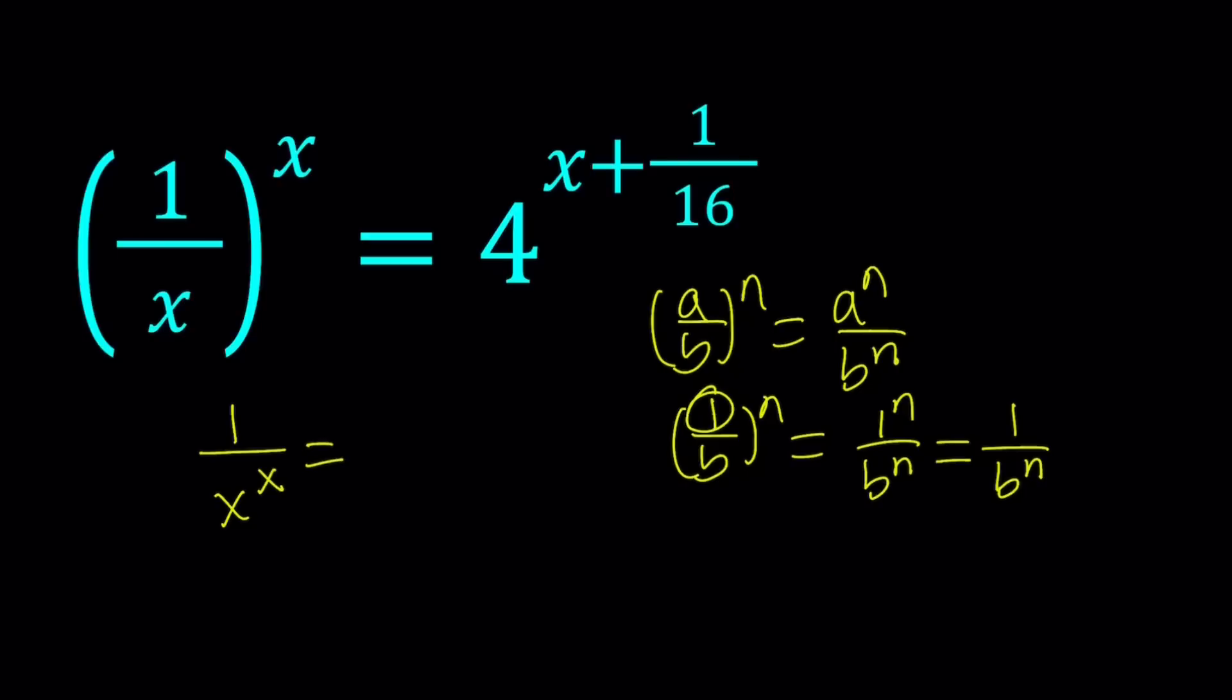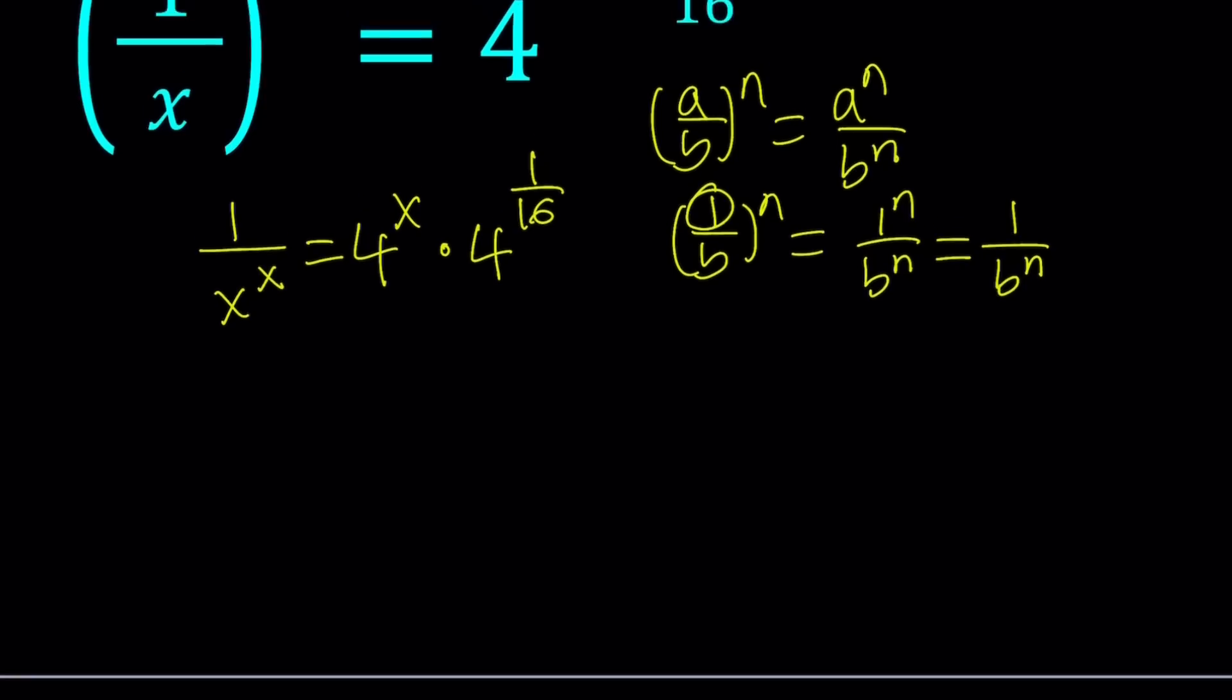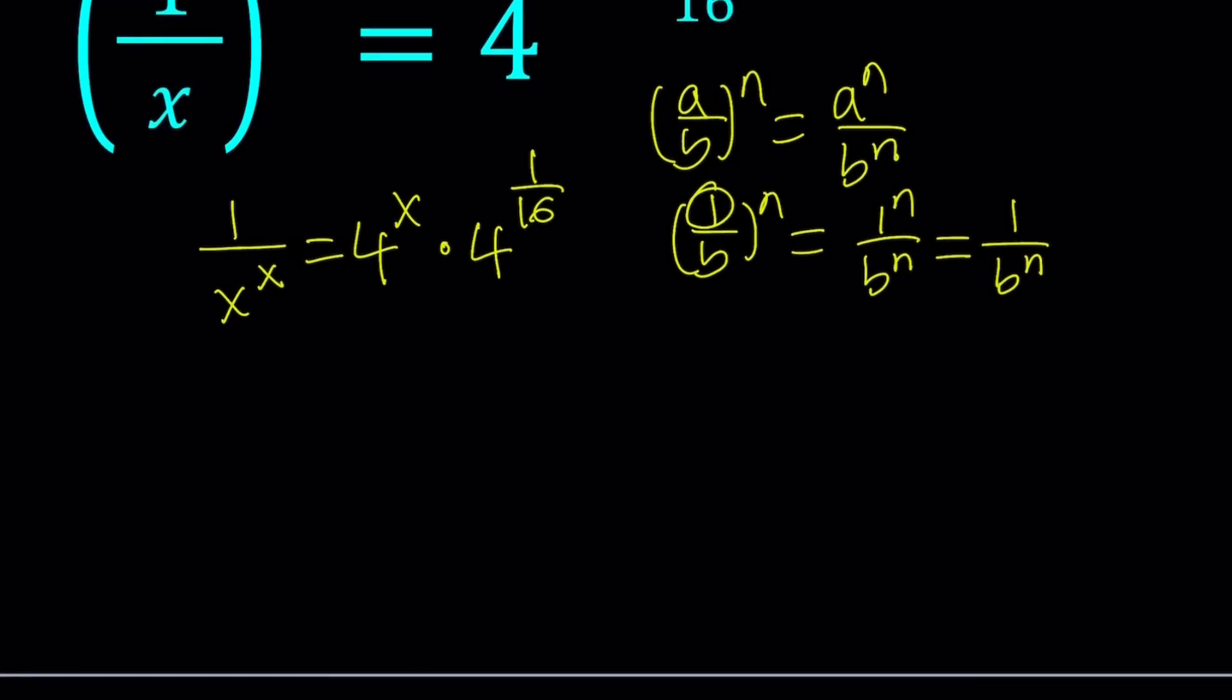Let's go ahead and split these up into a product, 4 to the x times 4 to the power 1 over 16. So I'm going to go ahead and present the solution method. And then we're going to take a look at the graph of some functions. Let's go ahead and simplify this a little bit more or manipulate it. I want to multiply both sides by x to the power x. I want to get rid of all the fractions. So we get x to the x times 4 to the x times 4 to the power 1 over 16 equals 1.